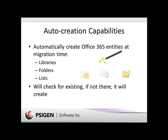We've also got auto-creation capabilities. In the SciCapture product configuration, you can set it up so that upon the initial migration to Office 365, we'll auto-generate libraries, folders, and lists. We'll first check for their existence, and if they don't exist, we can auto-create them as long as we have the rights and permissions within the Office 365 environment.